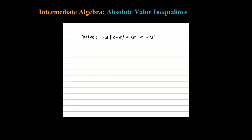We're asked to solve an absolute value inequality. The first thing I'm going to do is isolate the absolute value by subtracting 15, so negative 3 times the quantity X minus 5 has to be less than negative 30.